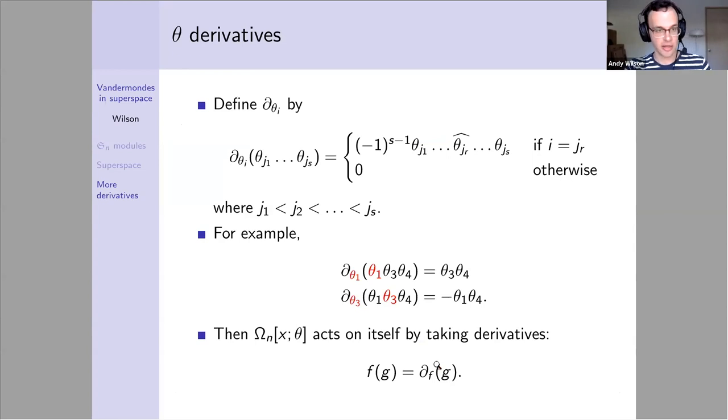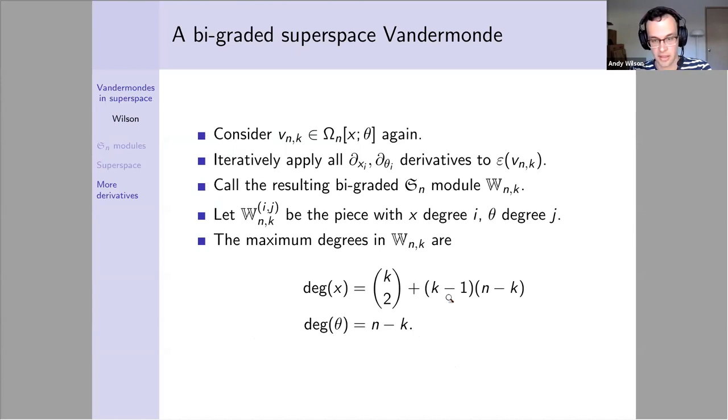The last type of derivative I'm going to talk about: forget about y variables for a while. We're just going to have the x and theta variables, and now we're going to take theta derivatives. If I'm trying to take the derivative of theta_i, if it appears, I just remove it and pick up a sign depending on where it appears in the theta monomial. If it doesn't appear, I send that monomial to zero. For example, if I remove theta_1 from this expression, I get a plus sign. If I remove theta_3, I get a minus sign. It turns out we get an action of the space on itself by taking derivatives.